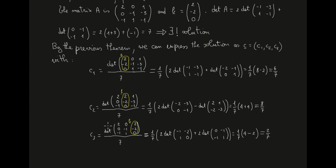The last coefficient is C3, where i is 3, so we replace the third column of A by B. Computing the determinant of this matrix and expanding it, we finally get 2, so C3 equals 2 over 7. We have therefore shown that the unique solution of the system of linear equations is the vector with coefficients 6 over 7, 8 over 7, and 2 over 7.